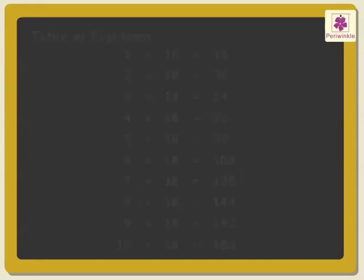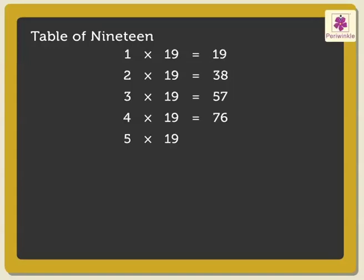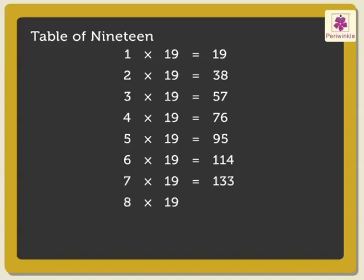Next is the table of 19: 1×19 is 19, 2×19s are 38, 3×19s are 57, 4×19s are 76, 5×19s are 95, 6×19s are 114, 7×19s are 133, 8×19s are 152, 9×19s are 171, 10×19s are 190.